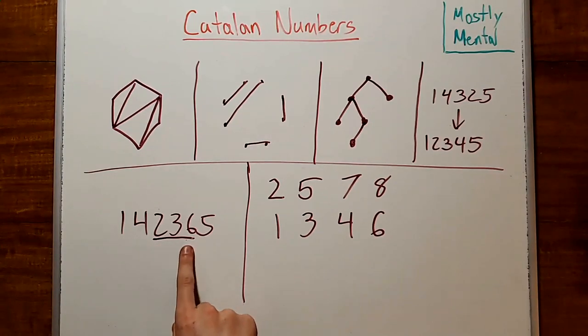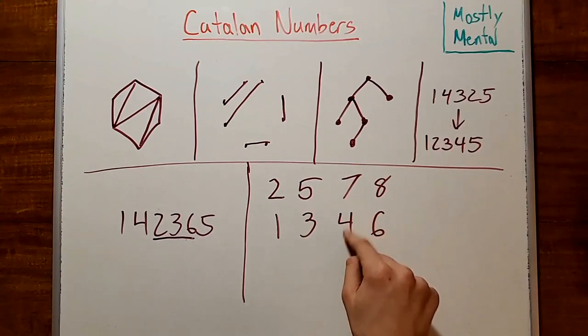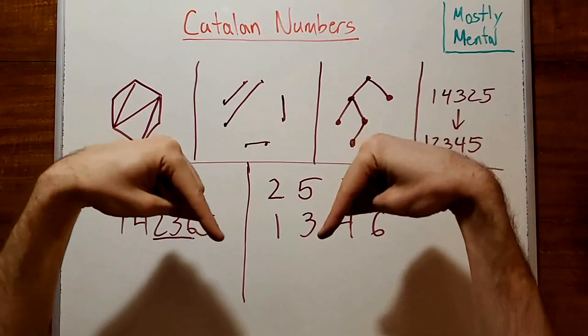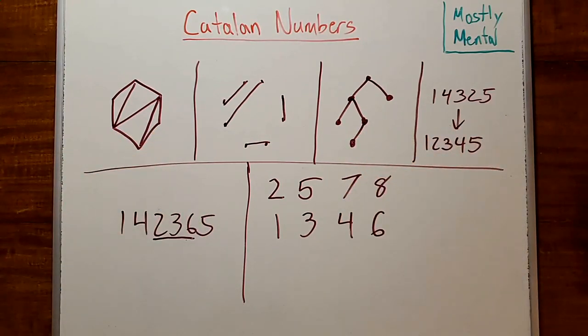The Catalan numbers also count the number of ways to arrange the numbers 1 through n when you don't have any three consecutive elements in order, like so, or ways to arrange the numbers 1 through 2n into two rows where each number is larger than the numbers below it or to its left. And so many other things. I encourage you to prove in the comments below that each of these really have the same count, and if you know any other interesting places the Catalan numbers are hiding, I'd love to see those in the comments too.